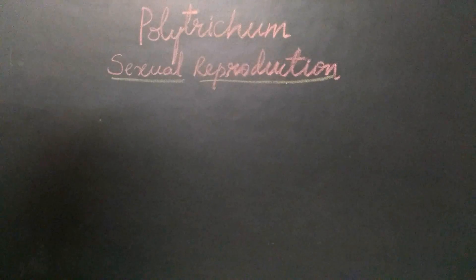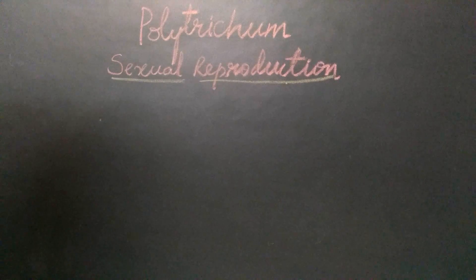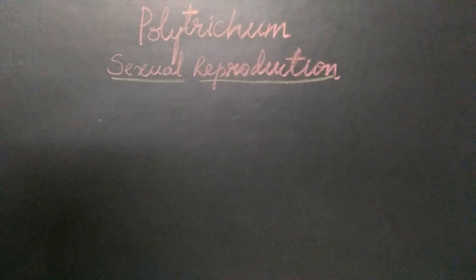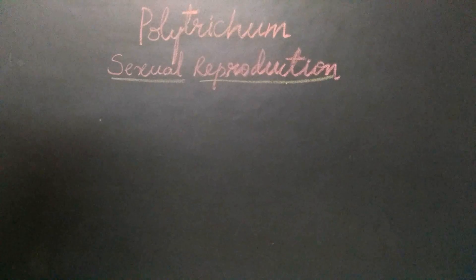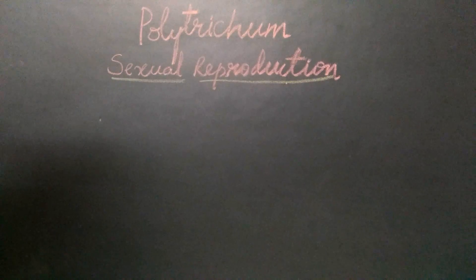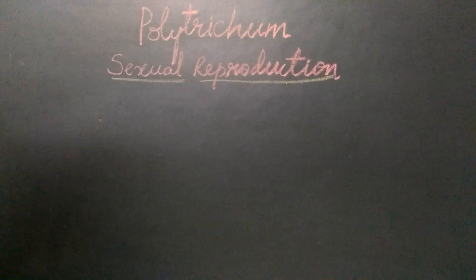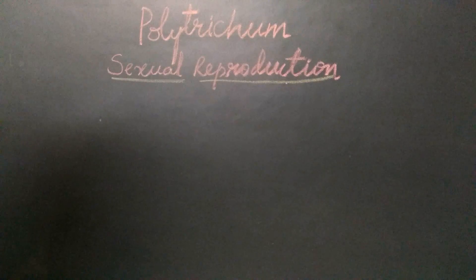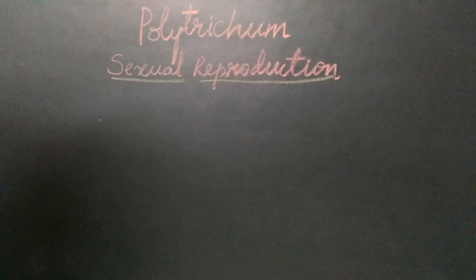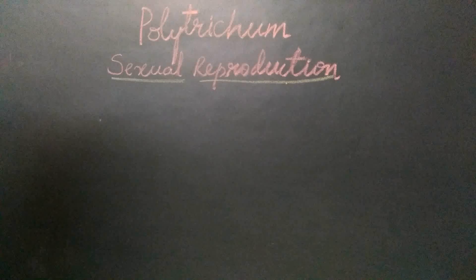Before we understand how it develops, let us see how we can identify the male and the female plant. Polytrichum is a dioecious plant — that is, the male and the female reproductive structures, the antheridium and the archegonia, develop on separate plants at the apex.